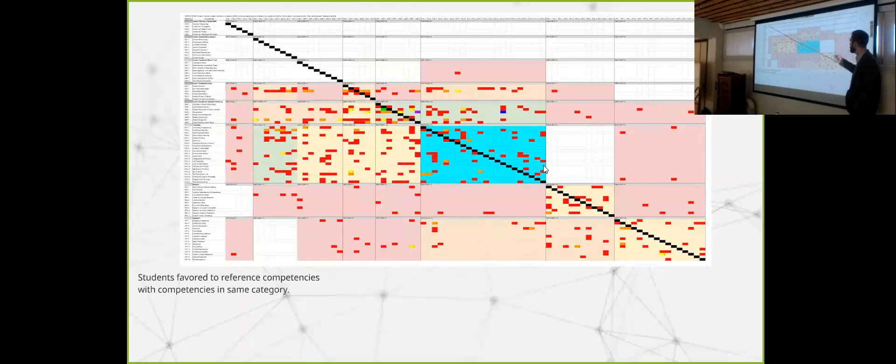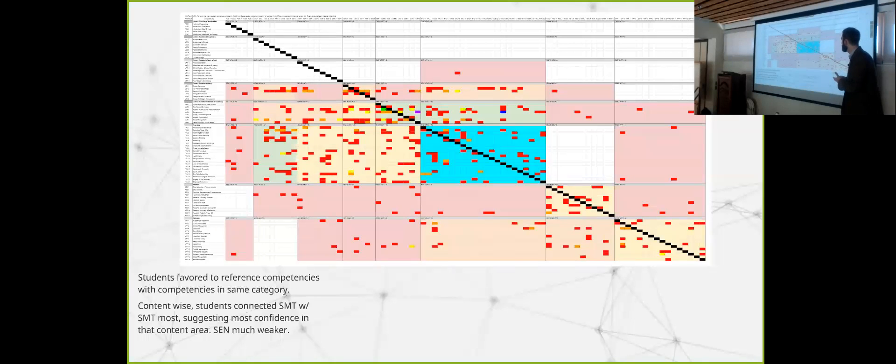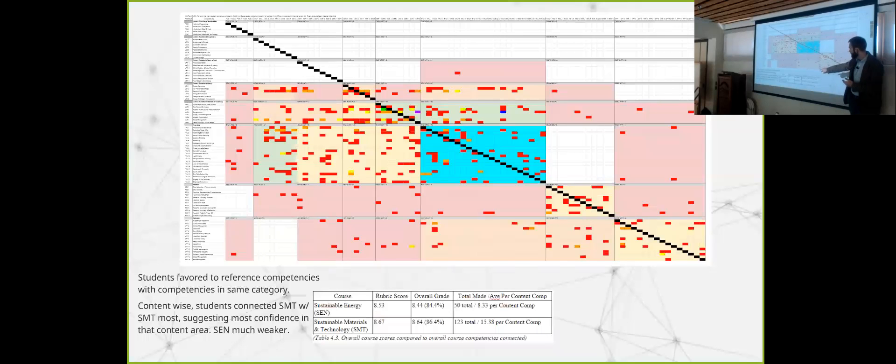So they tended to favor like category competencies. So they tended to clump together. I noticed that they were a lot better in materials and technology than they were with energy. So it was a teacher that tells me that I taught materials and technology really well, and I didn't do as well in sustainable energy, which was the other class I was teaching. So for me, that's feedback that, okay, there are some connections that are missing. So that's a relationship understanding that has produced a visual model.